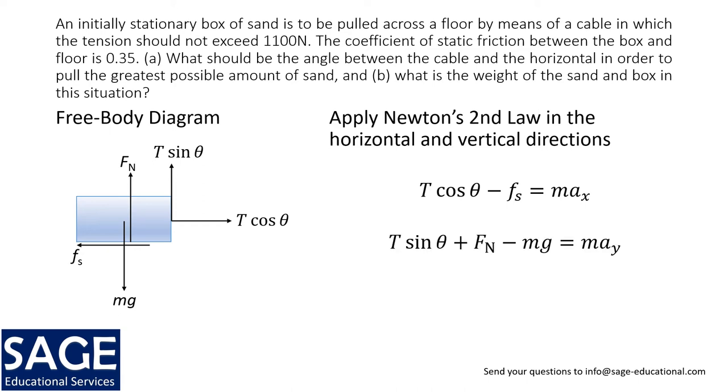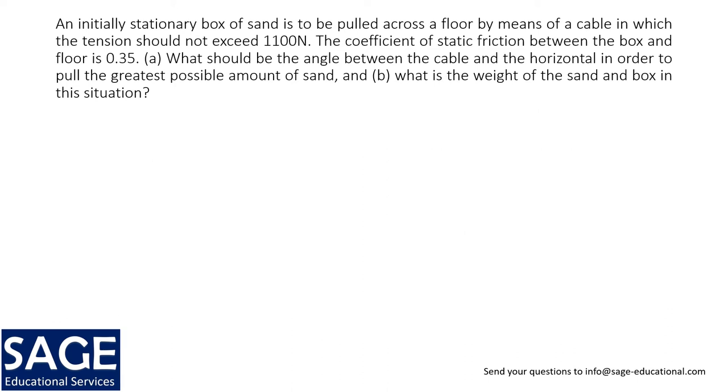In the vertical direction there are two upward forces and one downward force, so T sine theta plus fn minus mg equals may. Now since this is on the verge of moving, both max and may are zero.